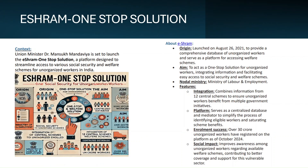The next update is on the e-SHRAM portal, launched by Union Minister Dr. Mansukh Mandaviya. It is a one-stop solution platform for streamlining access to various social security and welfare schemes for unorganized workers in India. It was first launched on August 26th, 2021, to provide a comprehensive database of the unorganized workforce.